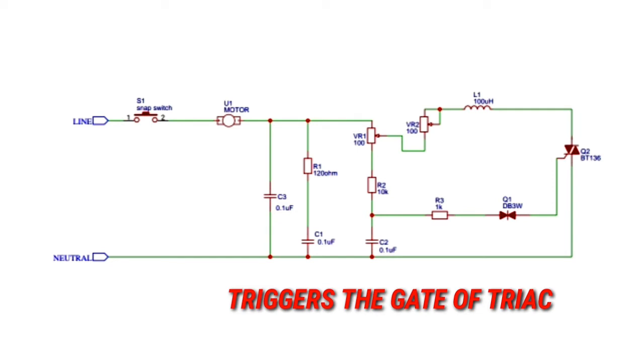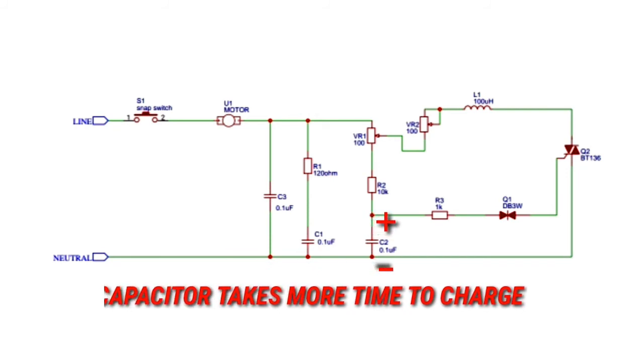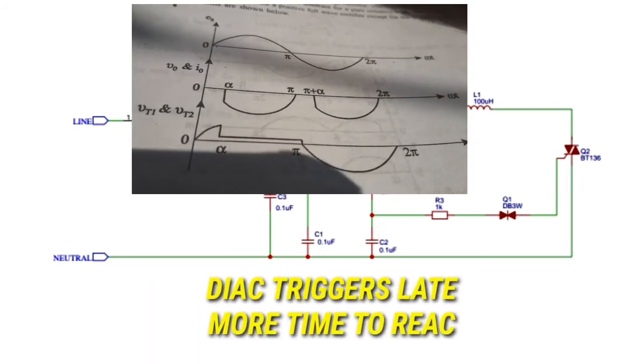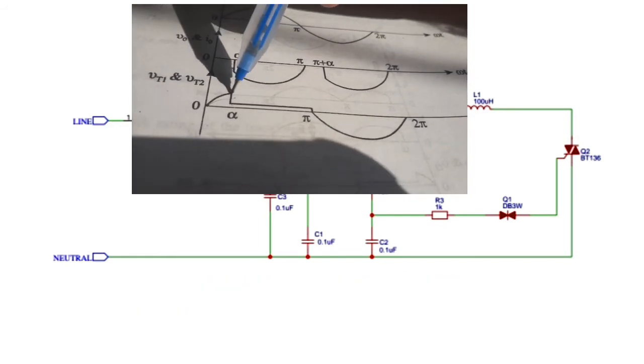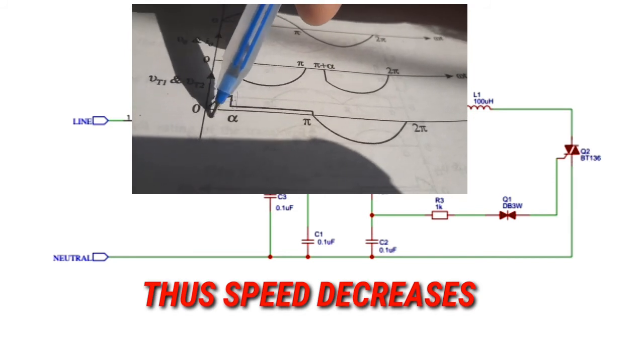But if we change the resistance of a variable resistor, or to be precise, if we increase the resistance, the capacitor takes more time to get charged up. So the diac triggers late and it turns on only for a fraction of a half cycle instead of a full half cycle, and thus the speed decreases.